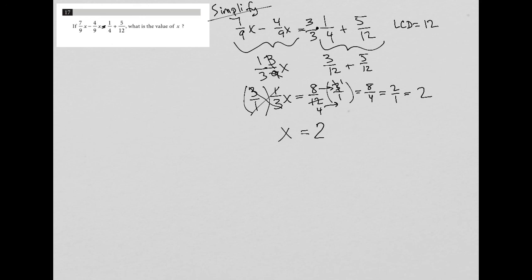If you're not very familiar with cross-canceling, we could have taken that same information, the 8/12 times 3 over 1, and just multiply directly across and ended up with 24 over 12, which again is just 2. So the answer here is 2.